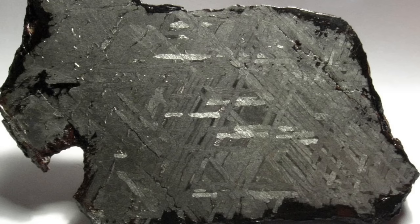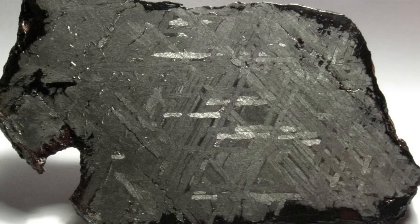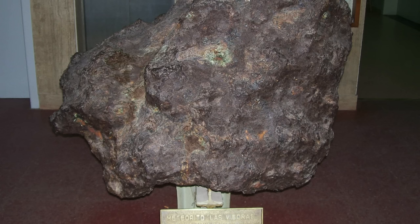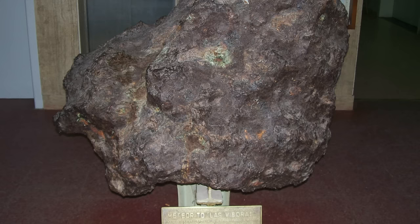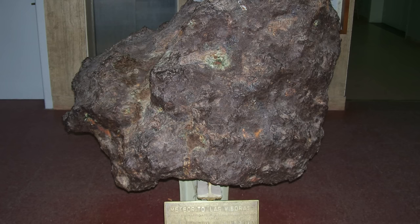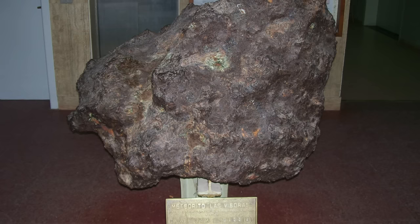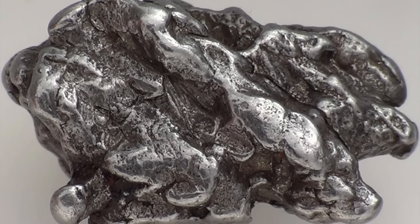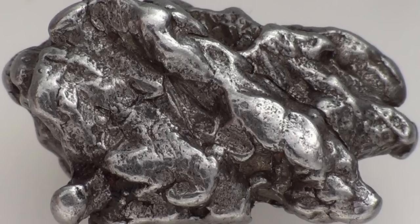One of the other things meteorites do is they record the time of their formation, if you know how to ask them nicely. And they do this by isotopic abundances. So, different radioactive elements decay over different timescales into different isotopes. And one of the most important systems is the uranium-lead system. So, there are two isotopes of uranium that are fairly abundant, 235, 238. And each of them decays to a different isotope of lead. So, if you measure the ratios of lead isotopes and you measure the uranium composition, you can infer how long ago the object formed.